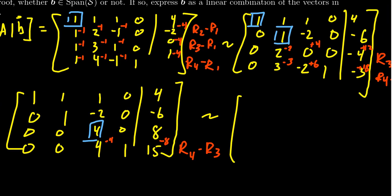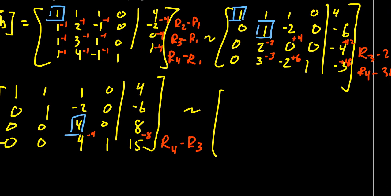And so this puts the matrix then in echelon form. Let me scoot you over a little bit. 1, 1, 1, 0, 4. We're going to get 0, 1, negative 2, 0, negative 6. Then we're going to get 0, 0, 4, 0, and 8. I also can't help but notice that everything in row 3 is actually divisible by 4.